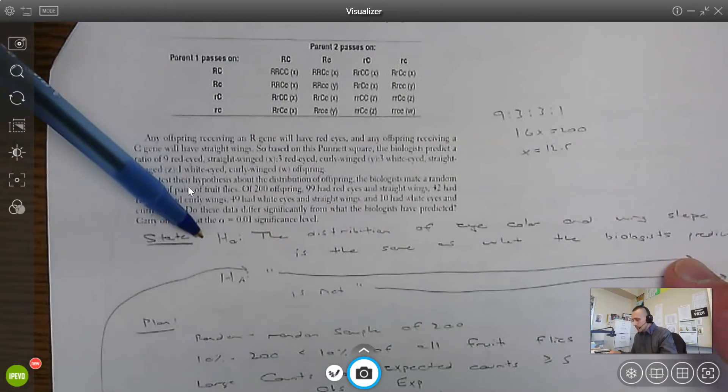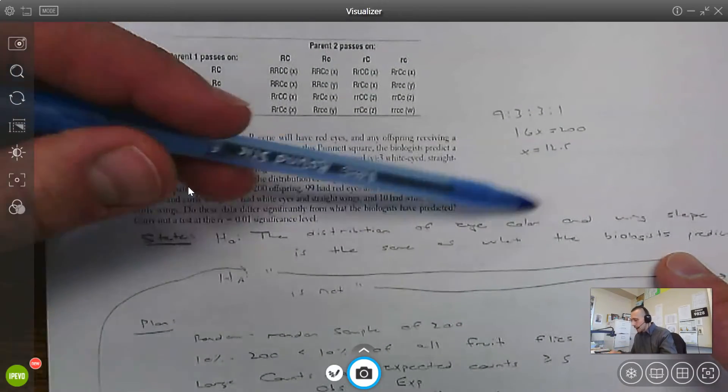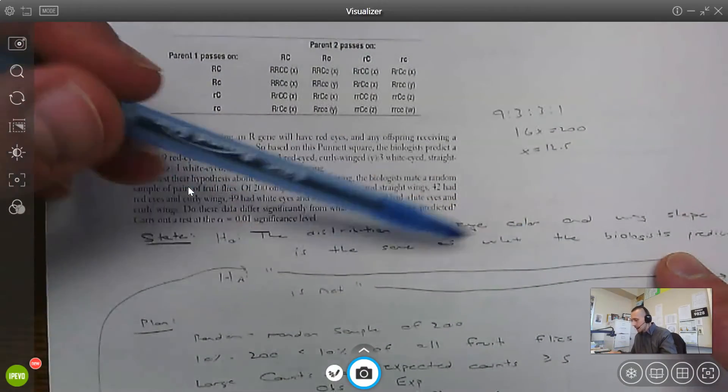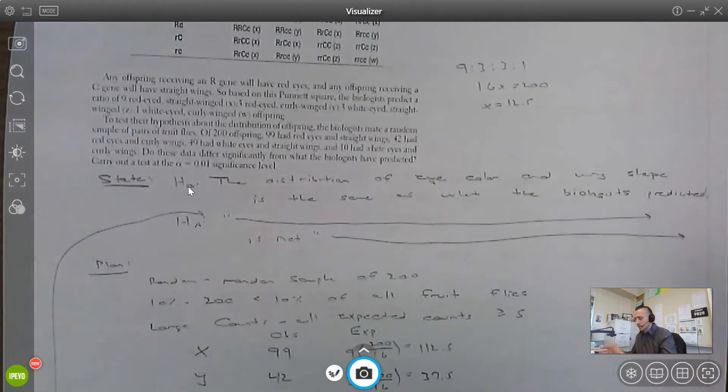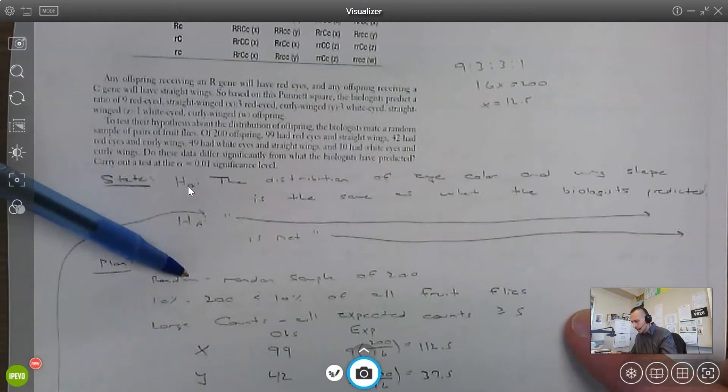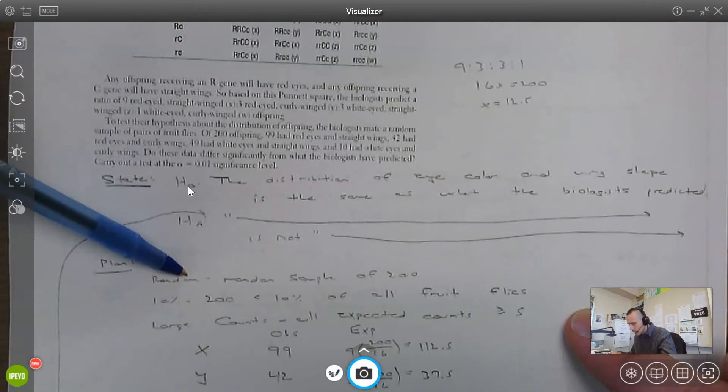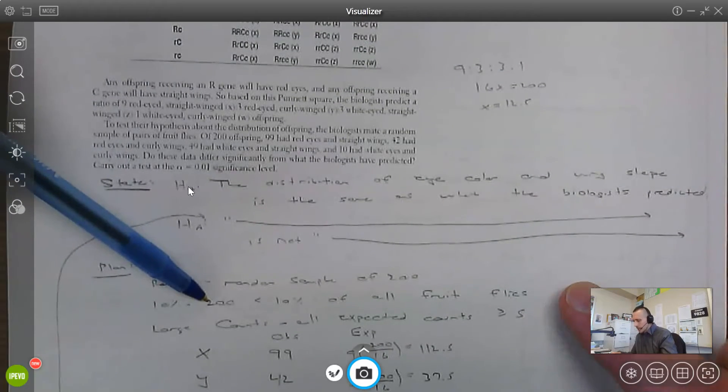So the state is going to be the distribution of eye color and wing shape is the same as what the biologists are predicting. The alternative would be that the distribution is not the same. Random sample of 200, I think, what is it? Fireflies, I think. Fruit flies. 200 is less than 10% of all fruit flies.